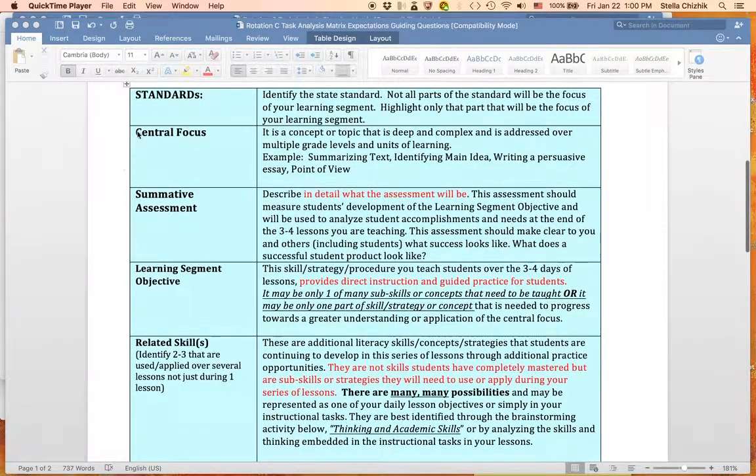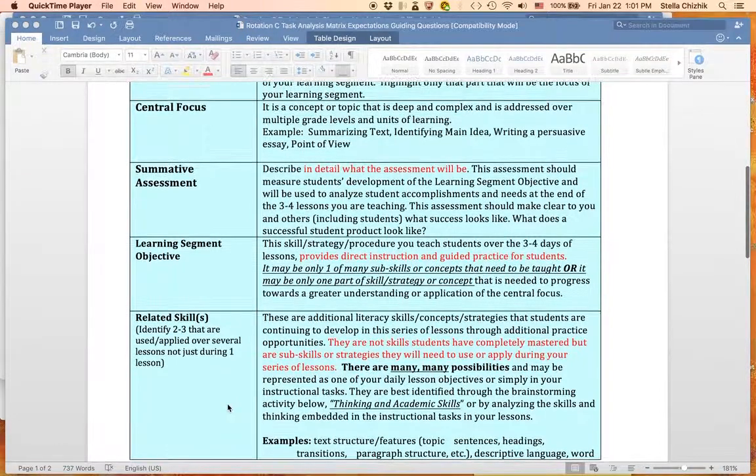Of course, you need to identify the standards, the central focus. We've talked about that. Then what we would like you to do is to engage in a bit of backwards planning and design your summative assessment. Spend your time really getting a sense of what you want for that summative assessment. If your central focus is on summarizing text, what is it that you want your students to do? What is the summary that you want them to provide? Create that ideal sample from students. Just what it may look like. If a student were to turn it in and did a great job, what would it look like?